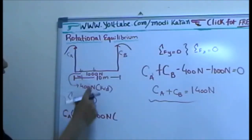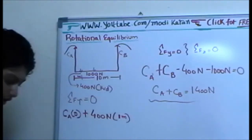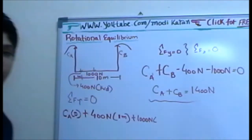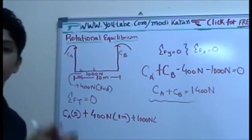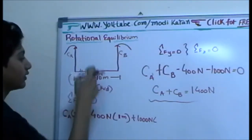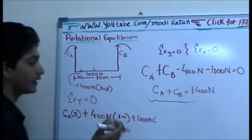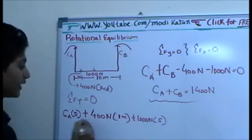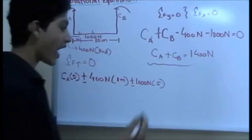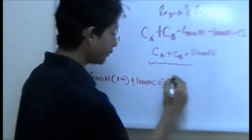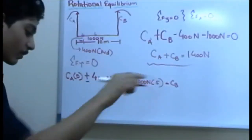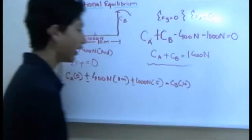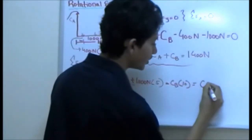We add 400 times 1 because 400 N is the weight of the person and they're standing 1 meter apart from the pivot point. Then we add 1000 N, but we don't use 10 meters — we divide that in half because the 1000 N acts at the middle of the stage, not everywhere. So half of 10 is 5. It's going in clockwise motion, that's why we add it. Then we subtract CB times 10 because CB is going in counterclockwise motion. All of this equals zero because it's in equilibrium.